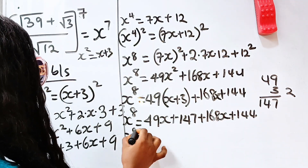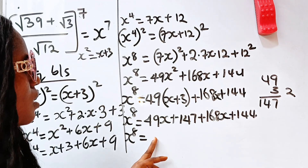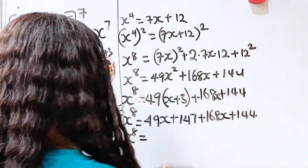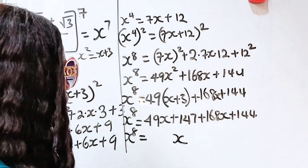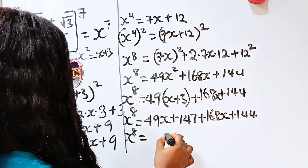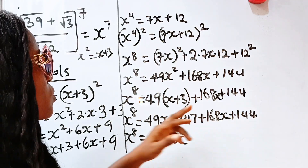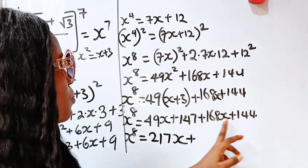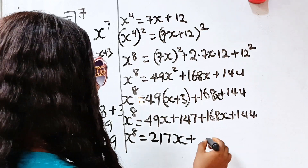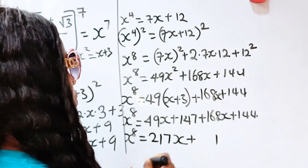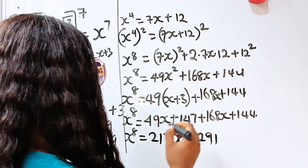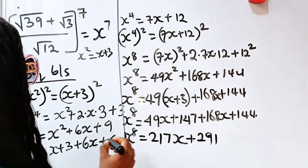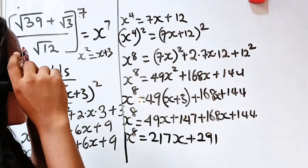Combining like terms: 49x plus 168x equals 217x, and 147 plus 144 equals 291. So x to the power of 8 equals 217x plus 291. But remember we are not looking for x to the power of 8 — we are asked to find x to the power of 7.